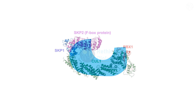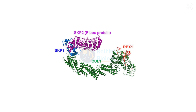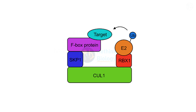One example of a ubiquitin ligase is the SCF complex, which is composed of five subunits: SKP1, Cullin, RBX1, E2, and F-box. The F-box protein is the substrate-binding arm, which can bind to different target proteins depending on the cell cycle stage. The F-box protein positions the target protein in a gap between E2 and the rest of the complex, allowing E2 to add ubiquitin to the target protein.